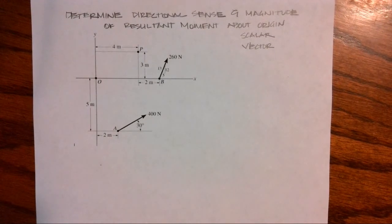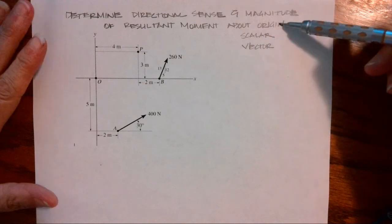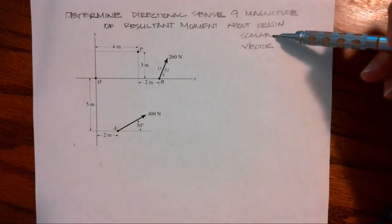So this is the problem we did Friday in class that did not get recorded, and we want to determine the directional sense and magnitude of the resultant moment about the origin using both scalar and vector analysis.